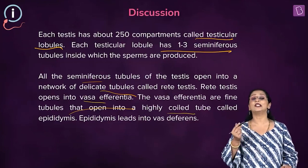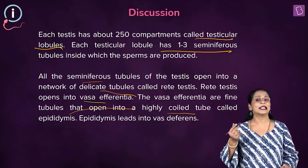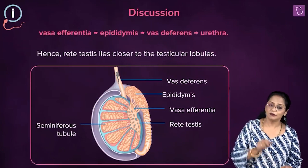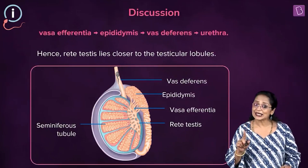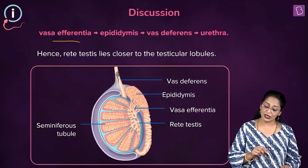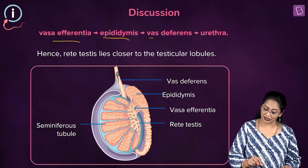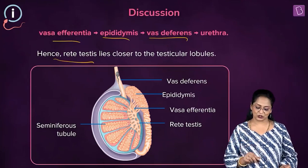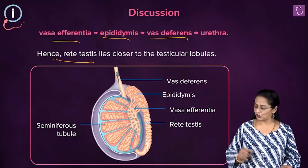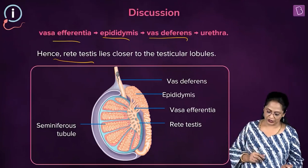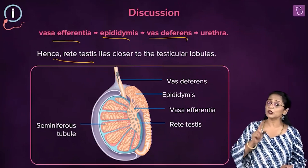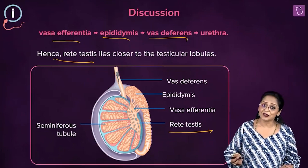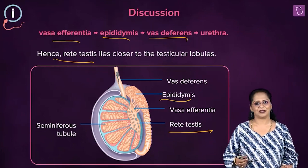Vas deferentia are highly fine tubules which open into a highly coiled tubule called the epididymis. The epididymis leads to the vas deferens, which opens into the urethra. So the sequence is: seminiferous tubules → rete testis → vas deferentia → epididymis → vas deferens. You can see this in the image, which clearly shows the seminiferous tubules opening to the rete testis, then vas deferentia, epididymis, and vas deferens.